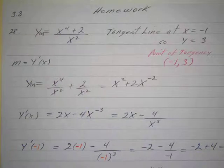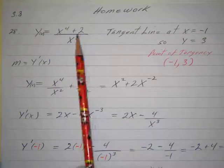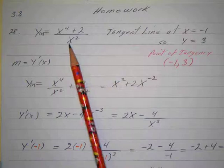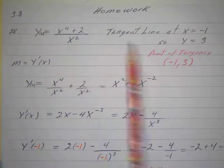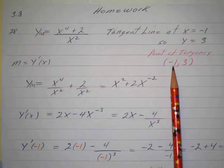So if I substitute negative 1 into the original equation so I can find the y-coordinate, so I have the point of tangency, that would be negative 1 to the fourth, which is 1, plus 2, which is 3. And on the bottom I've got negative 1 squared, which is just 1, so I've got 3 over 1 plus 2 over 1, which is just 3 over 1, which is 3. So that's my point of tangency, negative 1, 3.